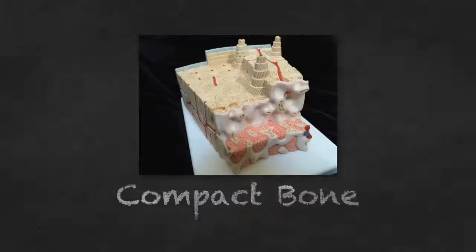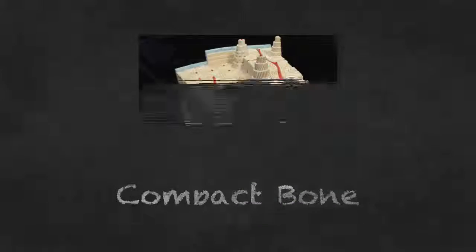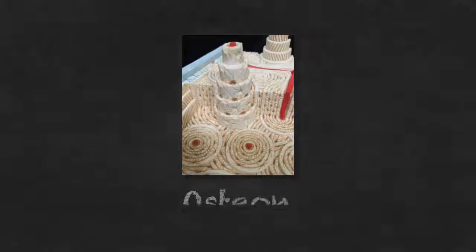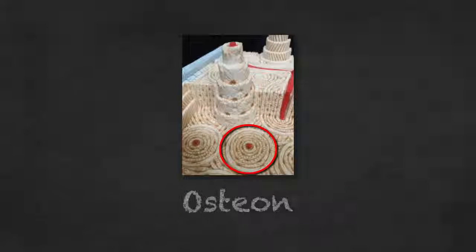This model represents a microscopic view of compact bone. This structure showing concentric rings is the osteon. The osteon is the functional unit of compact bone.